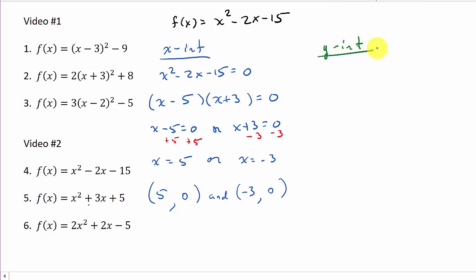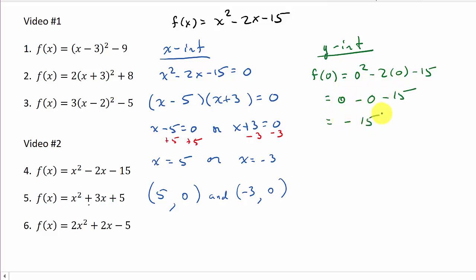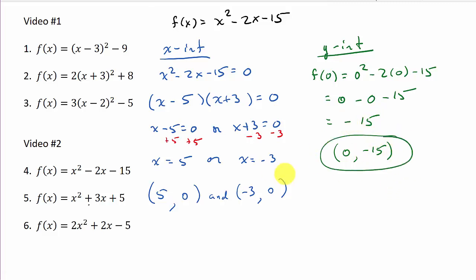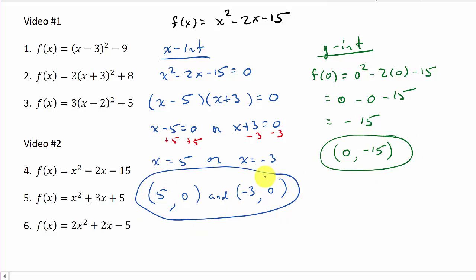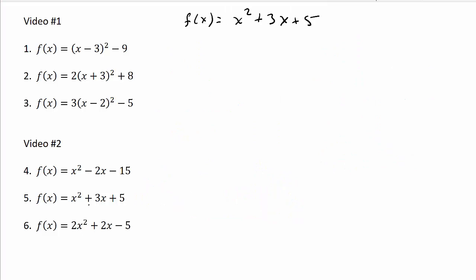Now let's find the y-intercept. To find the y-intercept, all we do is evaluate the function at zero — substitute zero in for x. So f(0) = 0² - 2(0) - 15, which is 0 - 0 - 15 = -15. So our y-intercept is (0, -15). There are your x-intercepts and y-intercept.